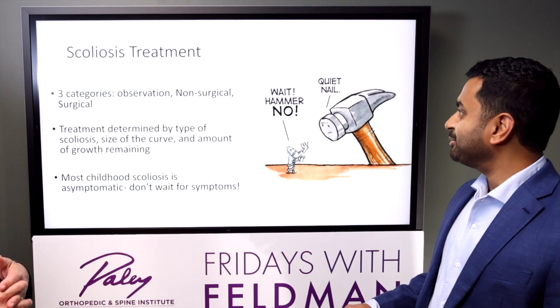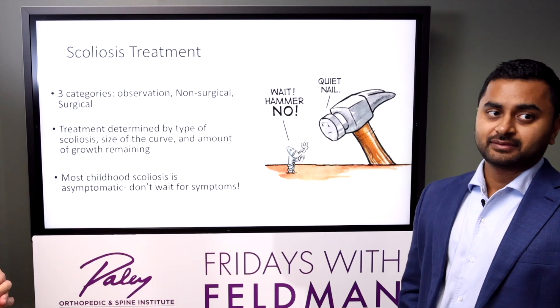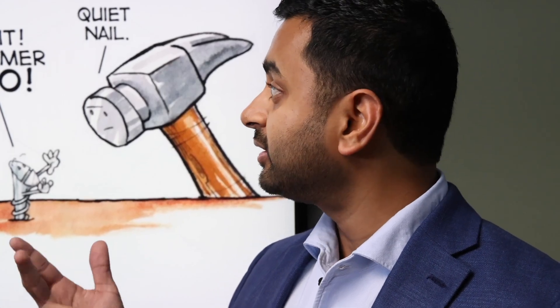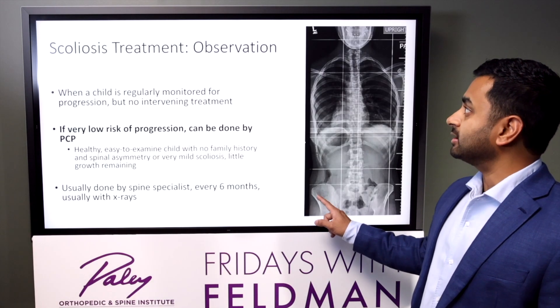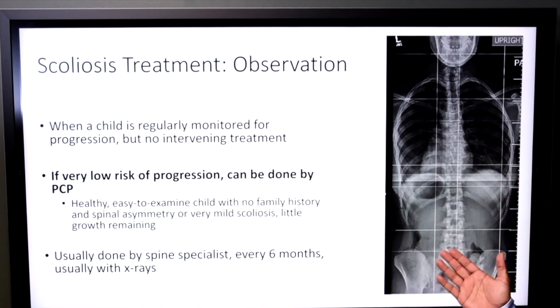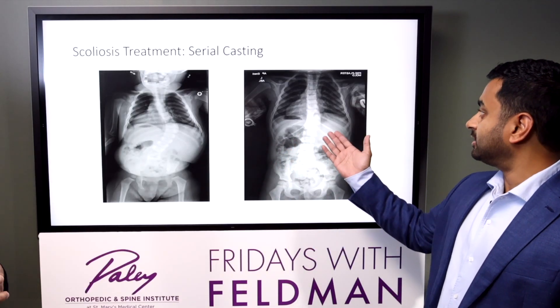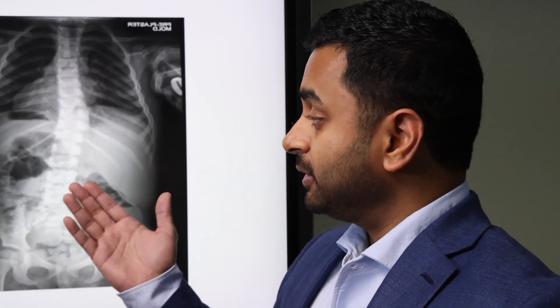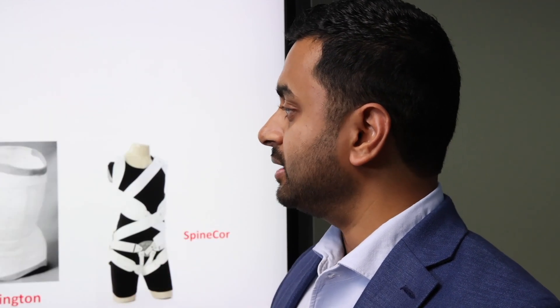Thanks, Dr. Feldman — happy to be part of the team. We take care of so many different types of scoliosis, but you can really break it down into three things: you can keep an eye on it, you can put them in a brace or a cast, or they get surgery. It really depends on how old the patient is, how much growth they have remaining, and how big the curve is. Most of the time they don't need anything — the spine has a very small wiggle and you just keep an eye on it with these low-dose radiation X-rays every few months to years, depending on the patient's age. If they're very young and have a big curve, sometimes you put them in a cast, and that can almost resolve the scoliosis.